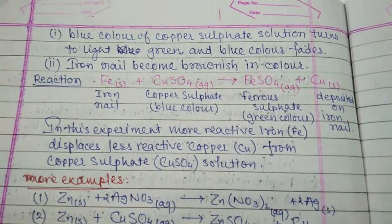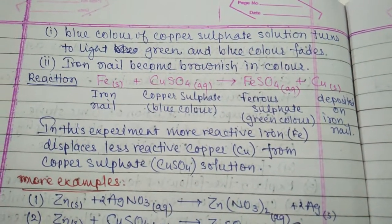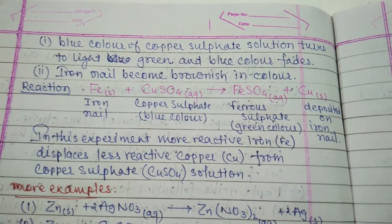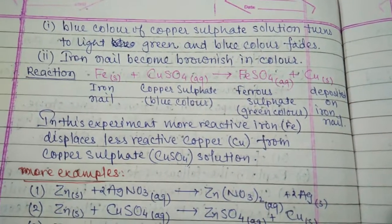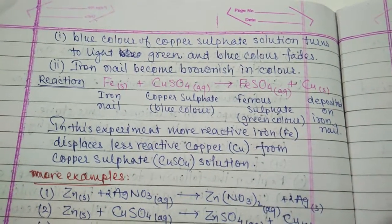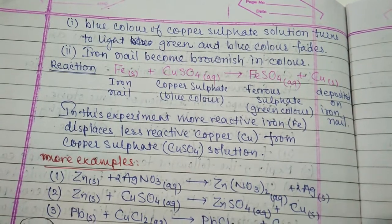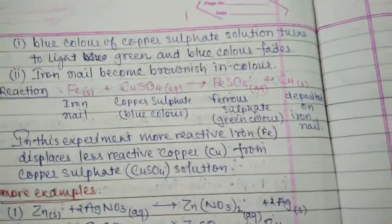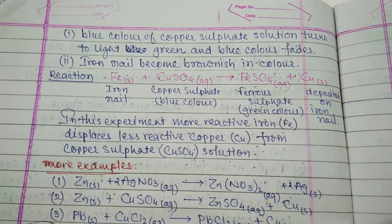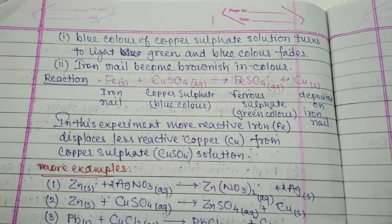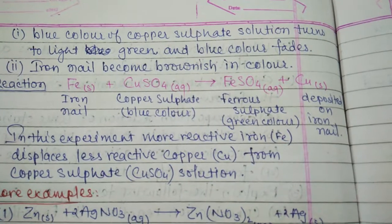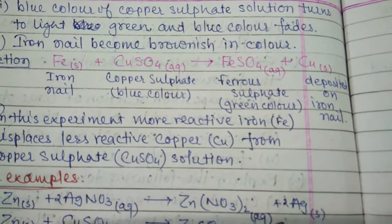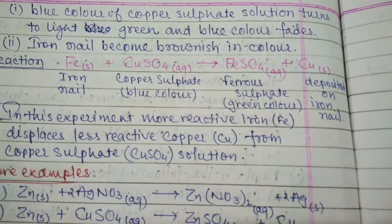After 20 to 30 minutes, the copper sulfate solution turns from light blue to light green. The iron nail becomes brownish because copper is deposited on it. This is the displacement reaction — more reactive metal iron displaces less reactive metal copper from copper sulfate solution. The reaction is: Fe + CuSO4 → FeSO4 + Cu. Copper deposited on the iron nail makes it appear brownish.